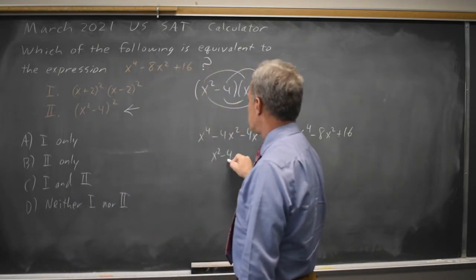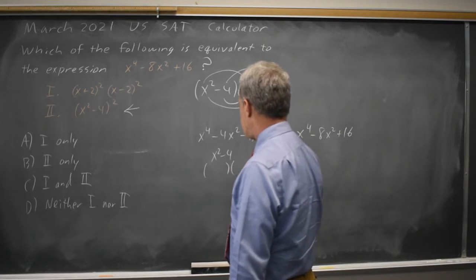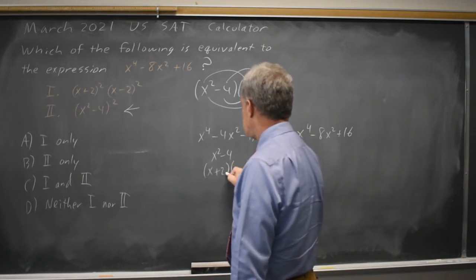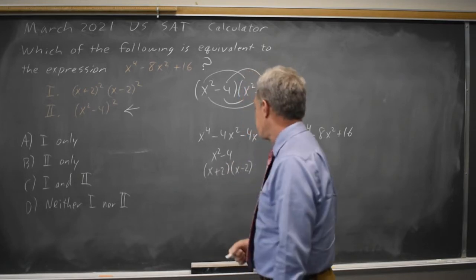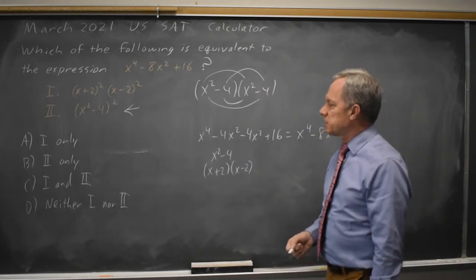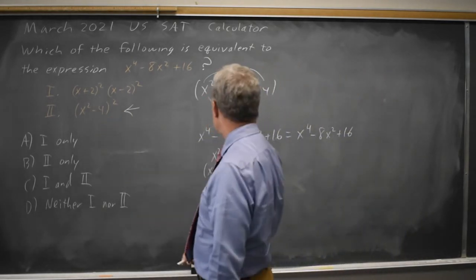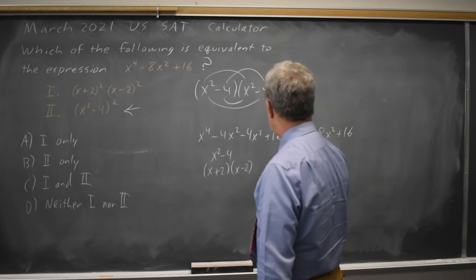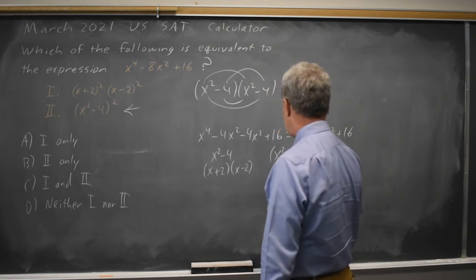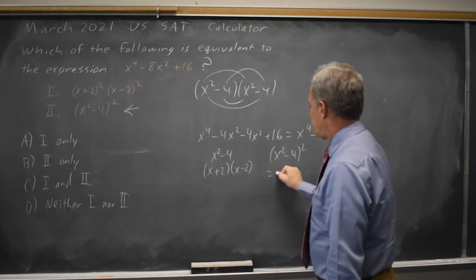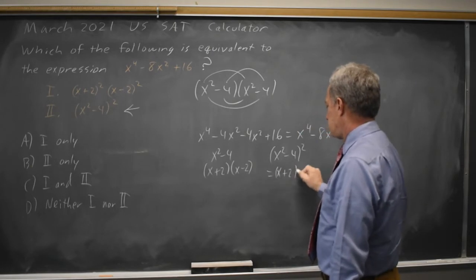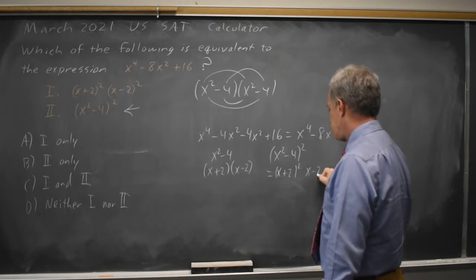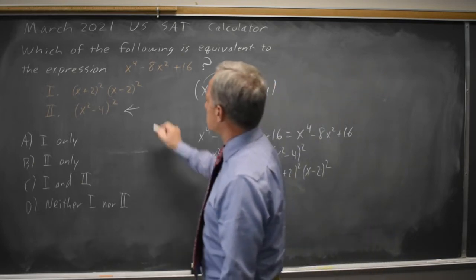x squared minus 4 factors as a difference of 2 squares of x plus 2 and x minus 2. And since we have that times itself in choice 2, x squared minus 4 squared will be x plus 2 squared times x minus 2 squared. And that is choice 1.